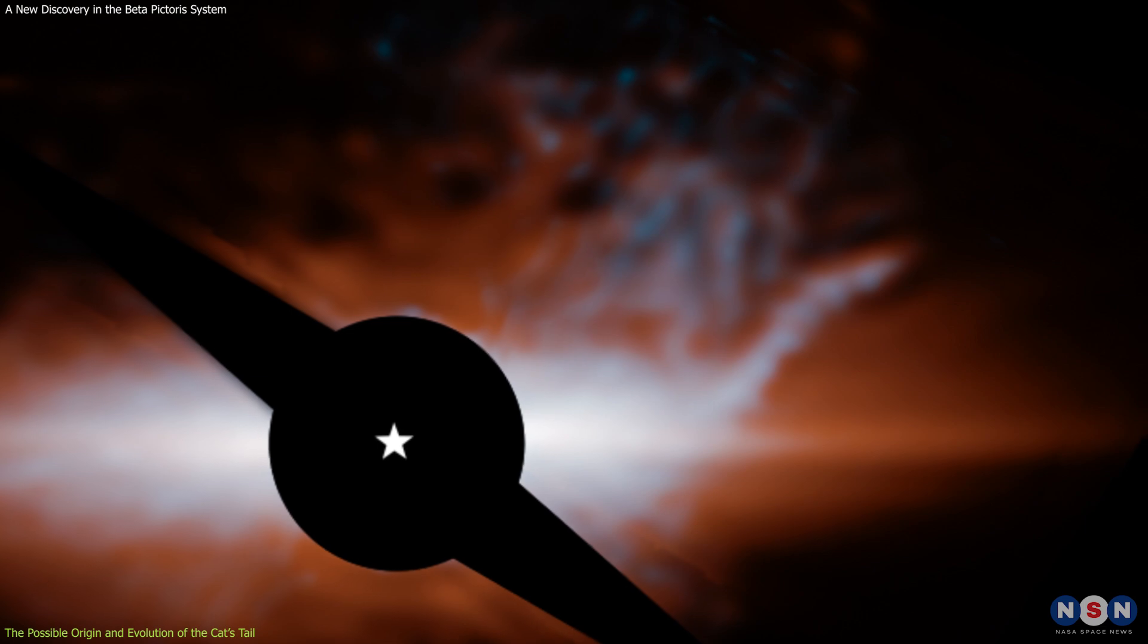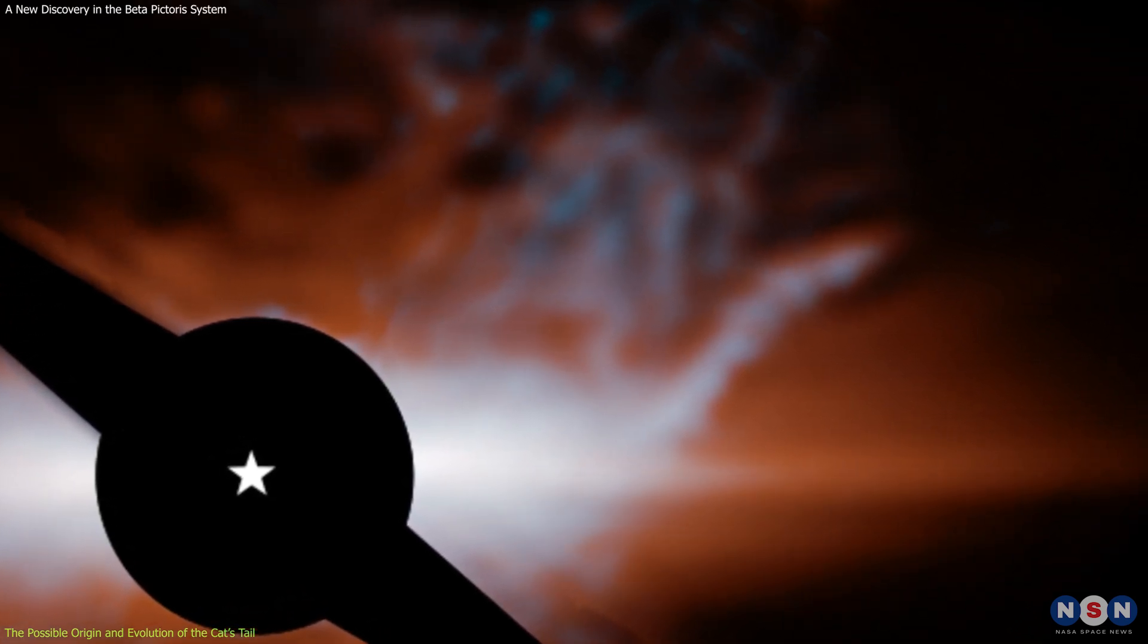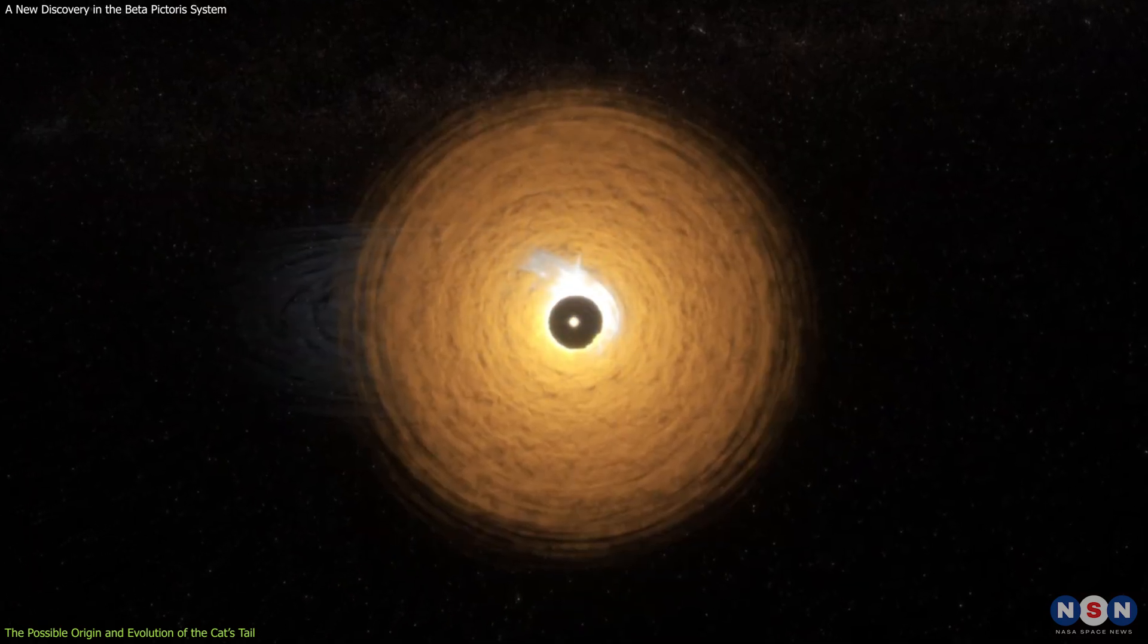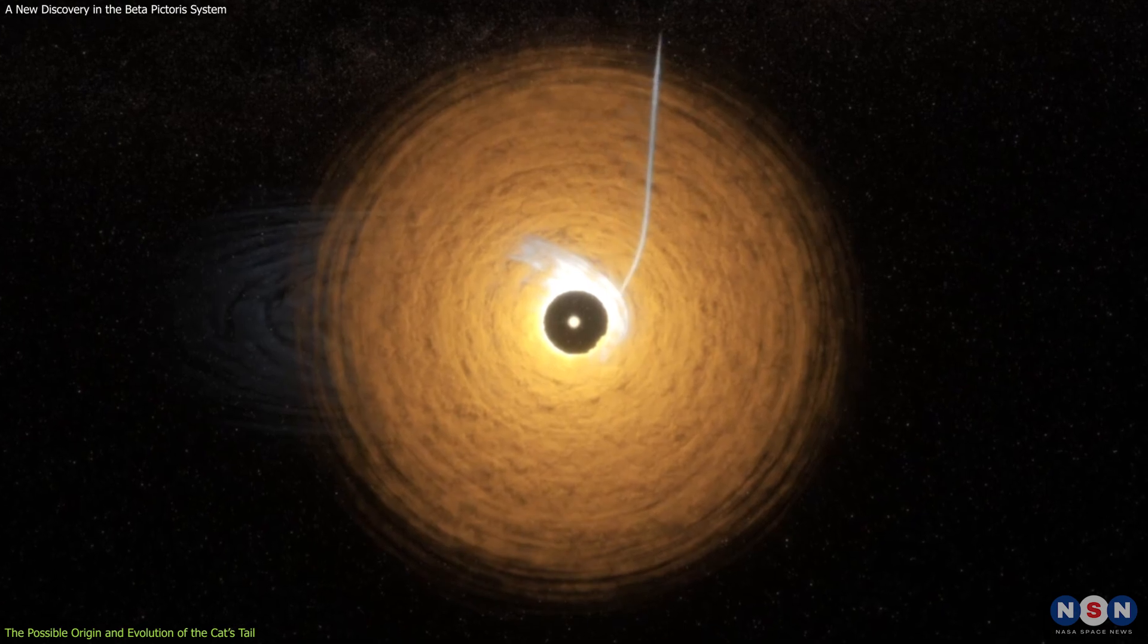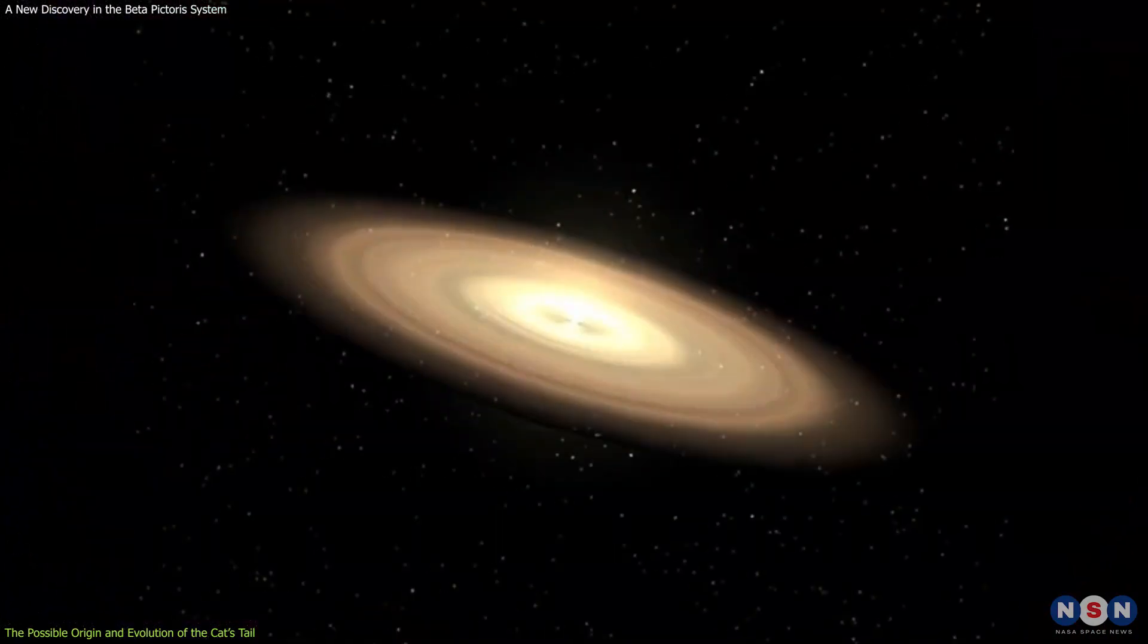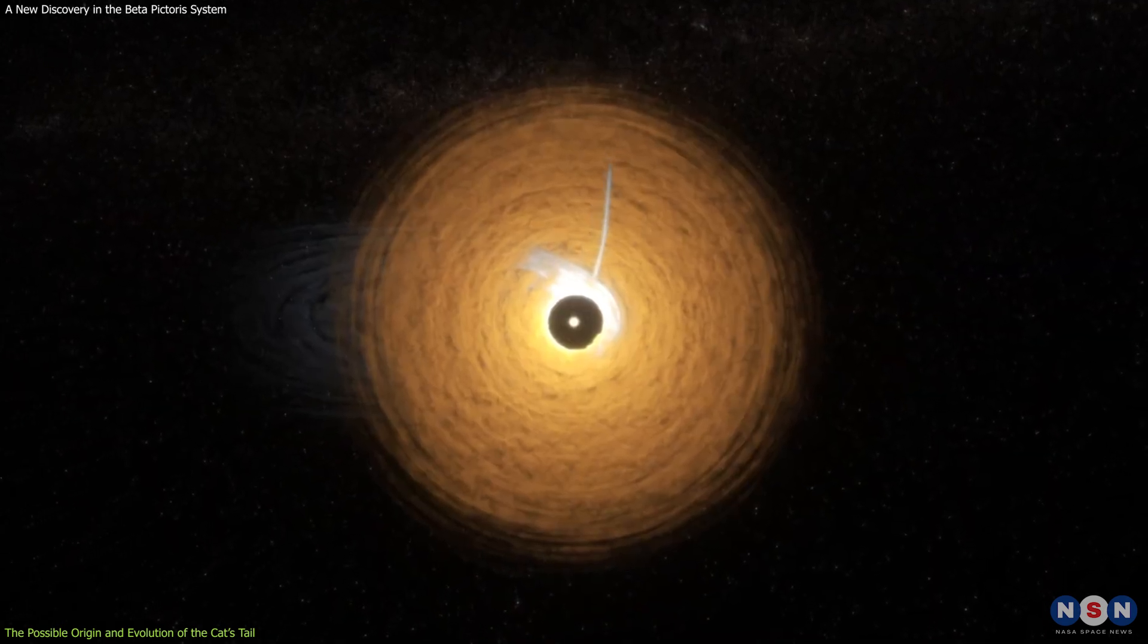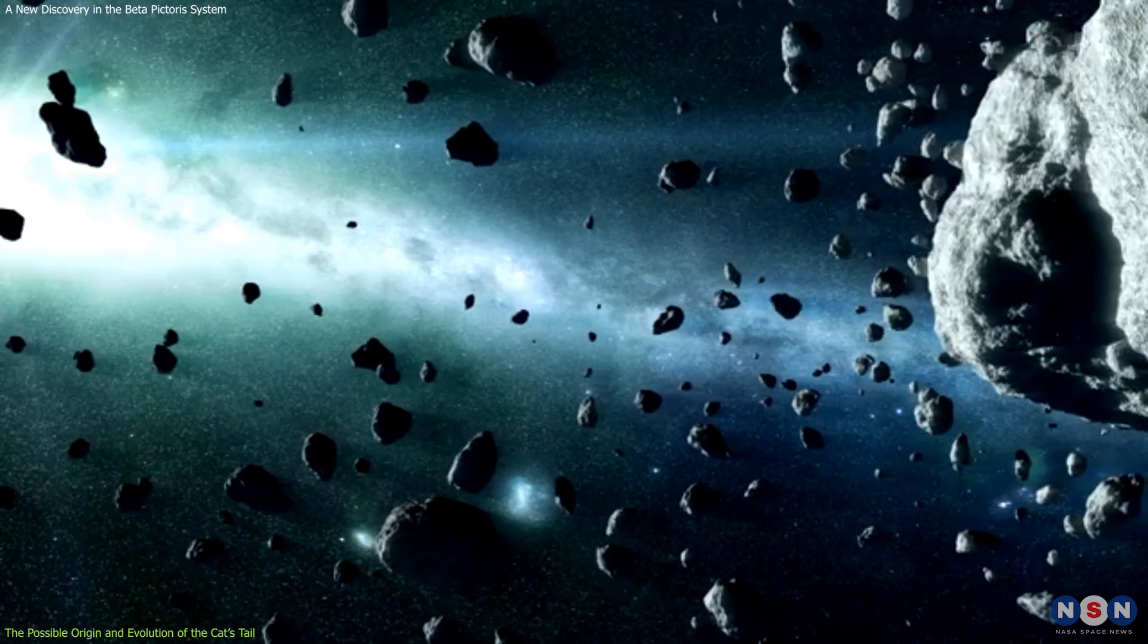Another possibility is that the cat's tail is a long-lived feature that has been there for millions of years. This could be the case if the secondary disk is actually a ring of dust, rather than a disk, and the cat's tail is the inner edge of the ring, seen in projection. The ring could have been formed by the gravitational influence of the exoplanets, which could have perturbed the orbits of the dust particles, creating gaps and warps in the main disk. It could also be fed by a steady stream of dust from the main disk, or from other sources, such as comets or asteroids.